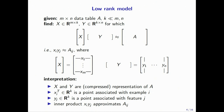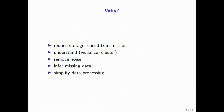The third great thing about this kind of model is that the inner product X_i times Y_j is approximately equal to A_ij, so we can do imputation — fill in missing values by looking at X_i times Y_j. Once again, why would we do this? We could do it to reduce storage, speed transmission, understand and visualize our data set, remove noise, infer missing data, or simplify data processing more generally. We'll see examples of all of these shortly.